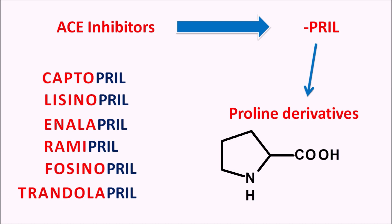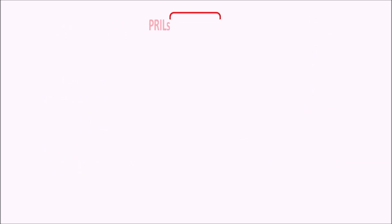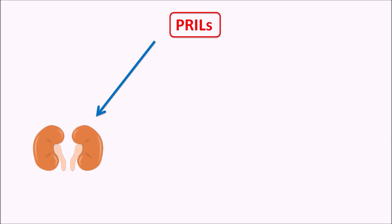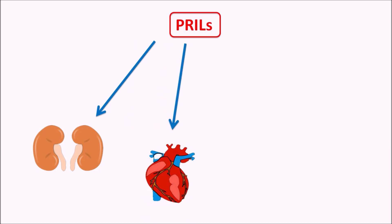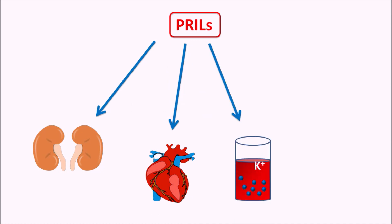There are many types of ACE inhibitors, and whether a drug is active or a prodrug, all ACE inhibitors share the same suffix PRIL. Today we will discuss the possible side effects produced by these ACE inhibitors. The PRILs can affect different organs — initially the renal system, then the cardiovascular system, electrolyte levels, the hepatic system, and even the respiratory system.